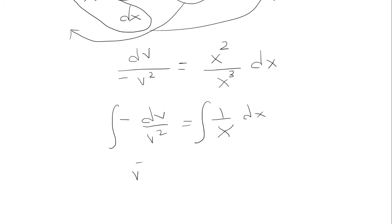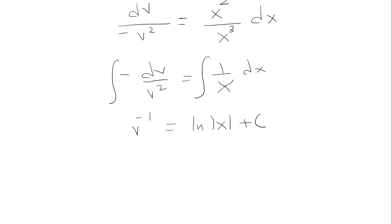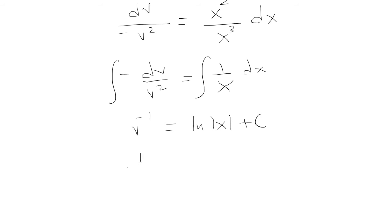So this will be v to negative 1 equals ln absolute value of x plus c. So v to negative 1 is 1 over v is equal to ln absolute value of x plus c.